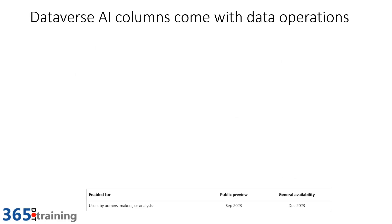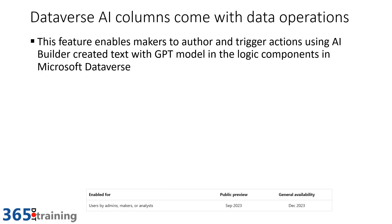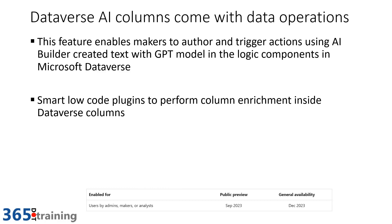One to keep an eye on is Dataverse AI columns. This feature enables makers to author and trigger actions using AI Builder to create text with a GPT model in logic components in Microsoft Dataverse. Think of it as smart low-code plugins that can perform column enrichments inside Dataverse when row actions happen. Public preview is September 2023 with general availability in December 2023.